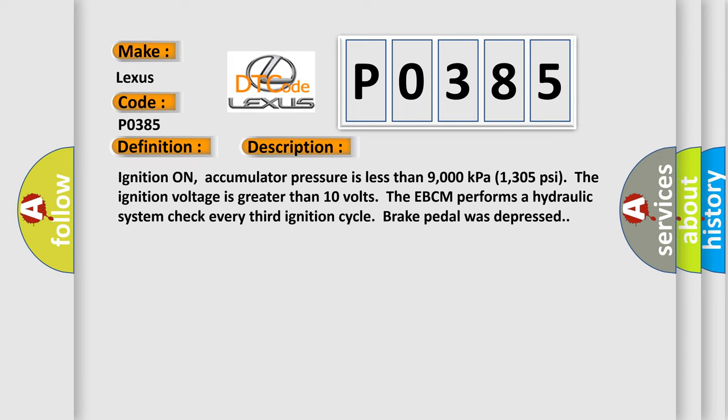Ignition on, accumulator pressure is less than 9,000 kilopascals, 1,305 PSI. The ignition voltage is greater than 10 volts. The EBCM performs a hydraulic system check every third ignition cycle when brake pedal was depressed.